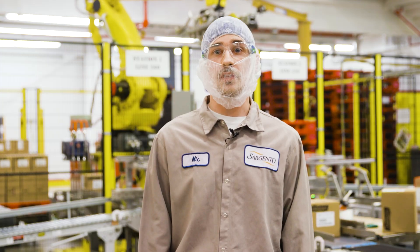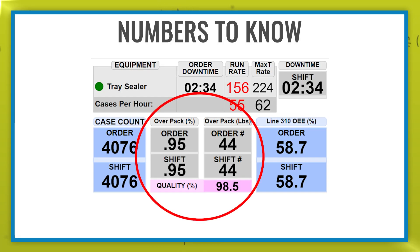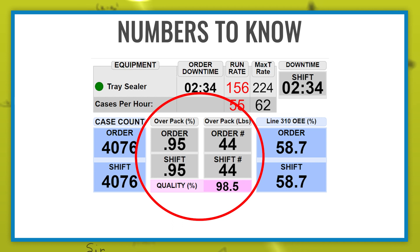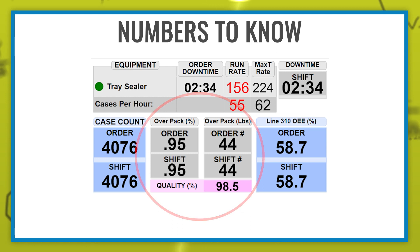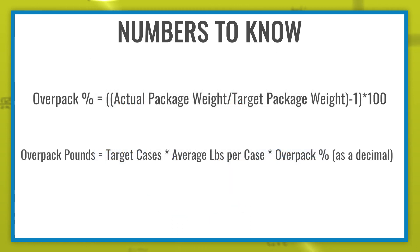Another piece of data we watch closely is what we call Overpack. Said another way, that is the amount of cheese we put into the package that is above the weight displayed on the package. To calculate Overpack, the formula looks like this.